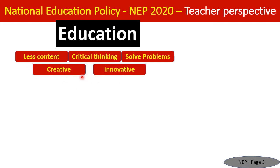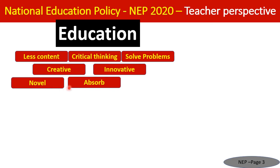Education must have novelty — something very new to the student — and must be easily absorbable. Creativity should not be abstract; it must be practically absorbable. There must also be change in the system through innovation, creativity, and novelty, which is possible only when education is multidisciplinary.